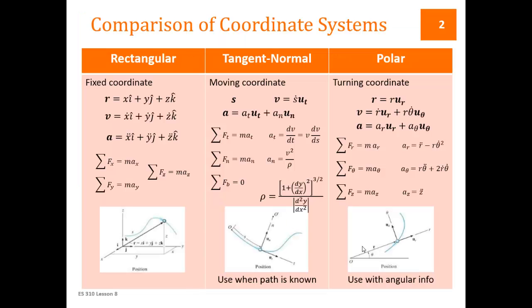As a quick review, these are the equations we've been working with over the last two lessons. In the rectangular system, we're using the x, y, z coordinates that we're most familiar with. We sum forces in the x, y, and z directions, and those forces are equal to the mass times the acceleration in the appropriate direction. The accelerations are just the second derivatives of the positions for each of those directions.